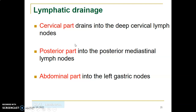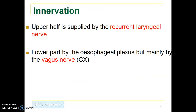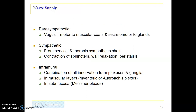The lymphatic drainage of the esophagus: the cervical portion drains into deep cervical nodes; the posterior patch drains into posterior mediastinal nodes; and the abdominal patch drains into left gastric nodes. The upper esophagus is innervated by the recurrent laryngeal nerve, while the lower part is innervated by the vagus nerve providing parasympathetic (secretomotor and peristaltic) supply. Sympathetic supply is from the cervical and thoracic sympathetic chain, with Auerbach's and Meissner's plexuses also present.